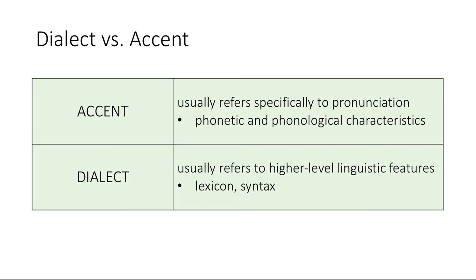One other distinction to make is dialect versus accent. Accent usually refers specifically to pronunciation — the phonetic and phonological characteristics. This is a very neutral term; everybody has an accent. You can't speak without having an accent, because by definition an accent is just the specific phonetic and phonological characteristics you're using. That's in contrast to dialect, which usually refers to higher-level linguistic features like the lexicon and syntax, although a dialect is often associated with a specific accent or way of speaking.